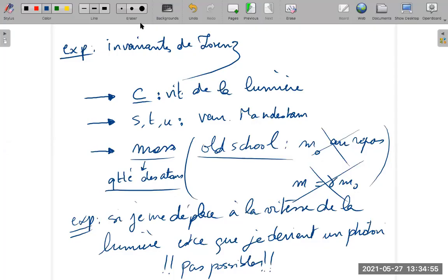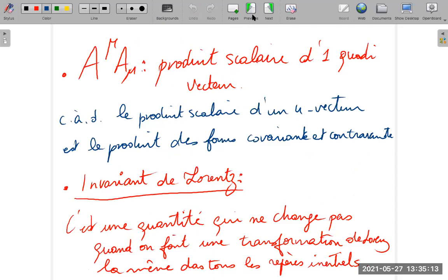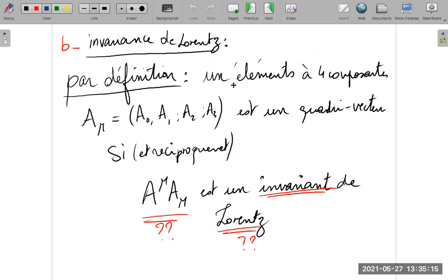Okay, so there are these examples of invariant entities. Now we're going to talk about this, but finally, by definition, we have an element with four components. If its scalar product is an invariant of Lorentz, then it's a four-vector. They have demonstrated, for example, that it's a four-vector.